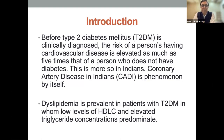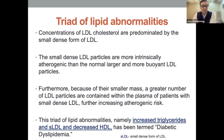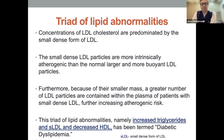Dyslipidemia in a diabetic is a very prominent problem. It's a triad of lipid abnormalities in a diabetic — I'm basically talking about type 2 diabetics. Concentration of LDL cholesterol is predominated by small, dense forms of LDL cholesterol. The small, dense LDL particles are more intrinsically atherogenic than the normal, larger and more buoyant LDL particles. Furthermore, because of their smaller mass, a greater number of LDL particles are contained within the plasma, further increasing atherogenic risk. The triad is: high triglyceride, small dense LDL cholesterol, and lower HDL values — this is termed diabetic dyslipidemia.